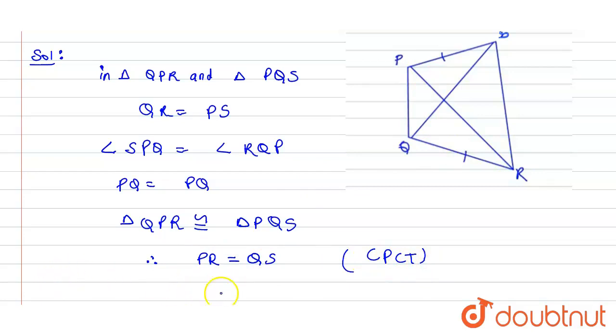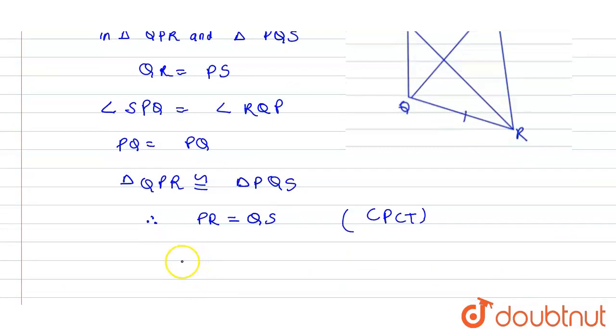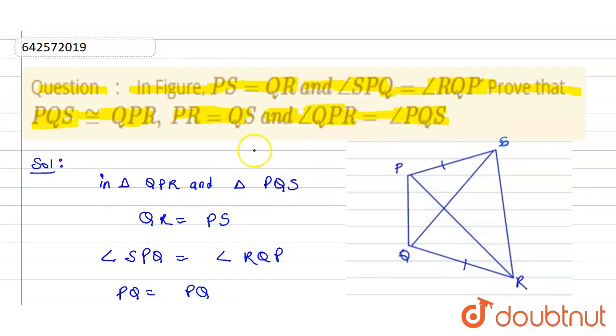Also by CACT, that is corresponding angle of congruent triangles are also equal, therefore angle QPR will be equal to angle PQS by CACT. Hence we have proved all the three things asked in the question, that is the desired answer for the given question.